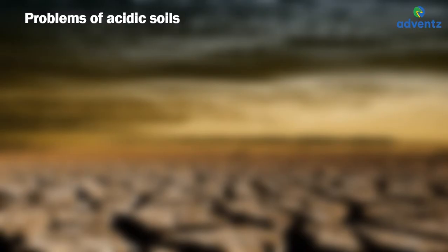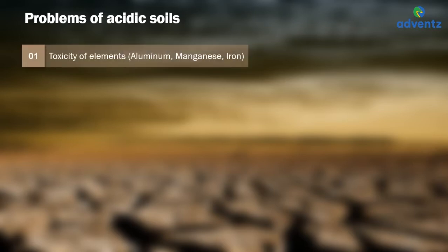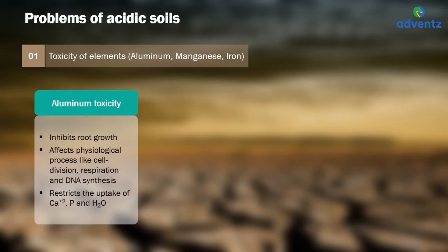Let us understand the problems of acidic soils. The first problem is toxicity of elements — aluminium, manganese, and iron. As the soil pH decreases due to the acid nature of soil, more of aluminium, manganese, and iron become soluble. Each of these has adverse impact on plant growth. Aluminium toxicity inhibits root growth, affects physiological processes like cell division, respiration, and DNA synthesis, and restricts the uptake of calcium, phosphorus, and water.